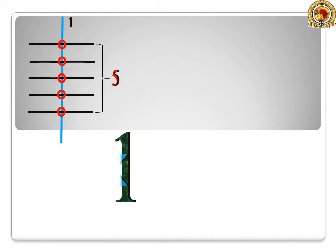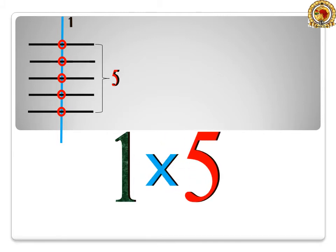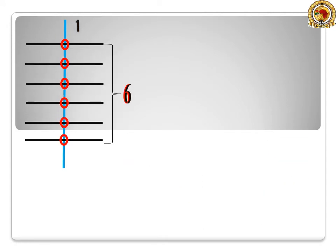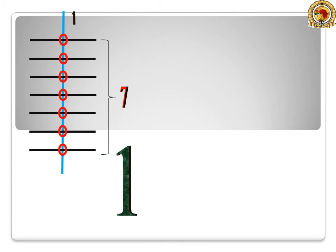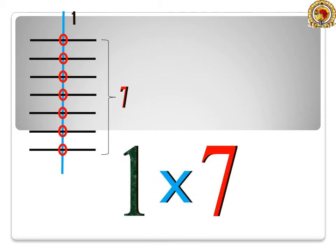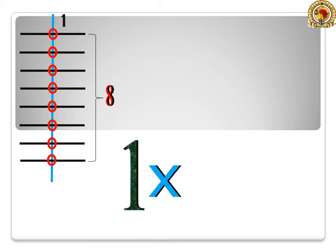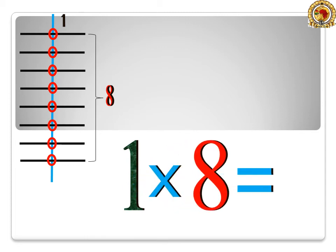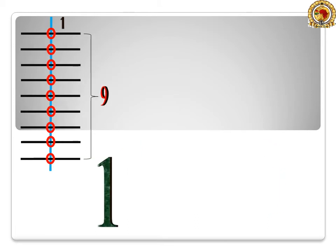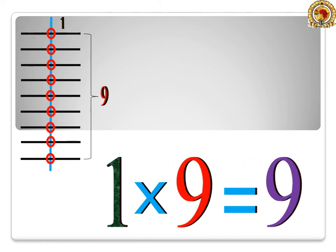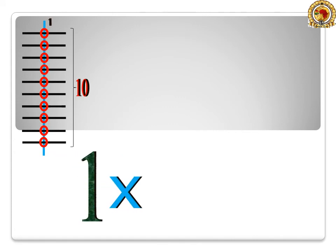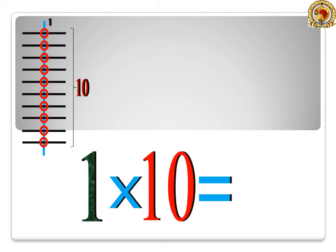1 times 5 is equal to 5. 1 times 6 is equal to 6. 1 times 7 is equal to 7. 1 times 8 is equal to 8. 1 times 9 is equal to 9. 1 times 10 is equal to 10.